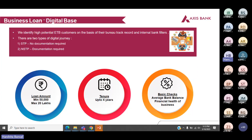Under digital base, we identify high-potential ETB (existing to bank) customers on the basis of their bureau track records and internal bank filters. There are two types of journeys: STP (straight through process) where no documentation is required, and NSTP (not straight through process) where we require documents depending on the case. Digital base includes CASA base, top-up, micro BL, and BL to CC. The minimum loan amount is 50,000 and maximum is 20 lakhs, with tenure up to four years. The basic checks are the average bank balance and financial health of the business.